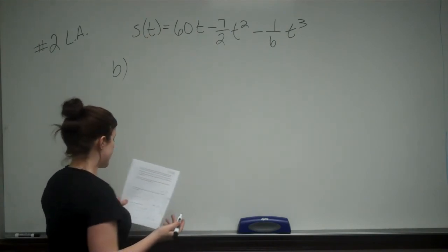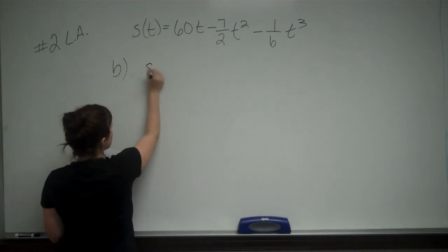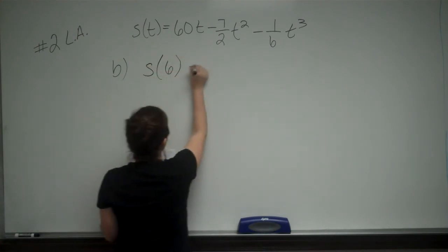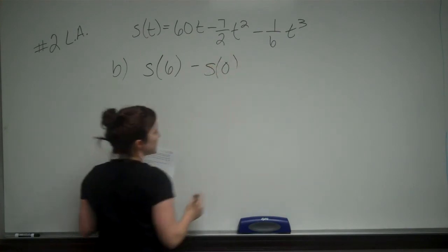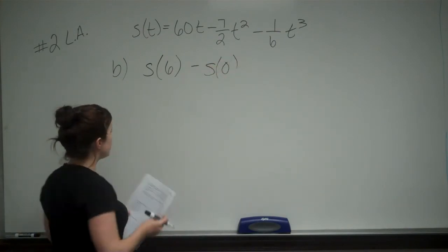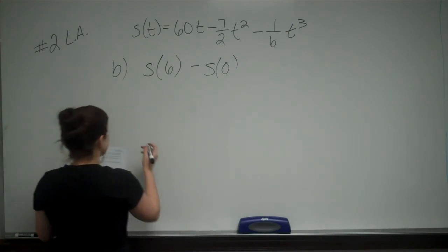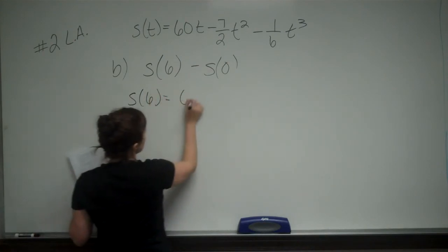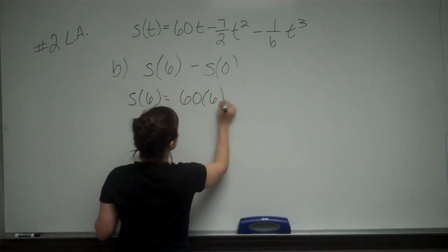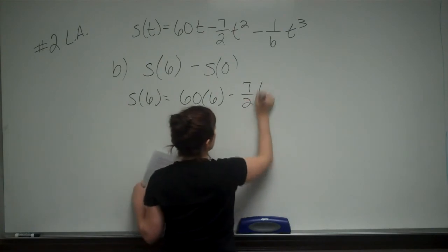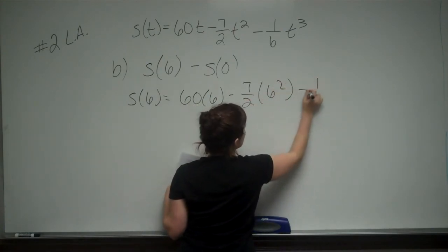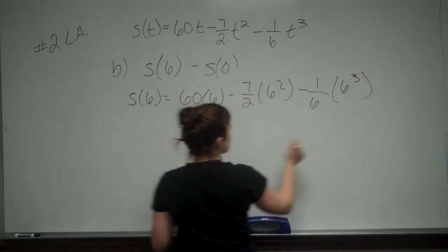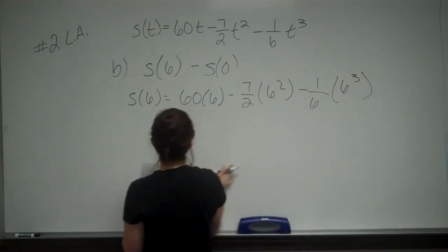And we are going to take the position at the time that we are stopped. Remember, it was at T equals 6. And we're going to subtract the position when we started, which is T equals 0. So I need to find S of 6. So S of 6 is equal to 60 times 6 minus 7 halves times 6 squared minus 1 sixth times 6 cubed. And then we're going to subtract S of 0.